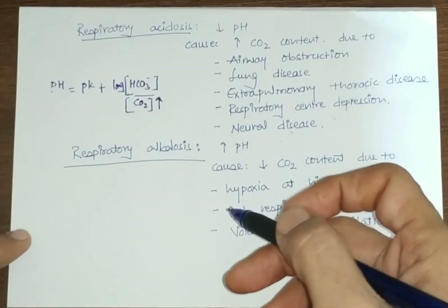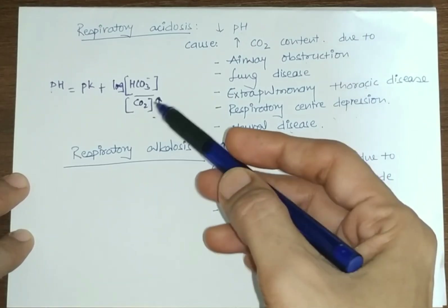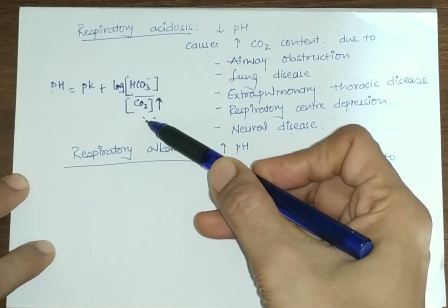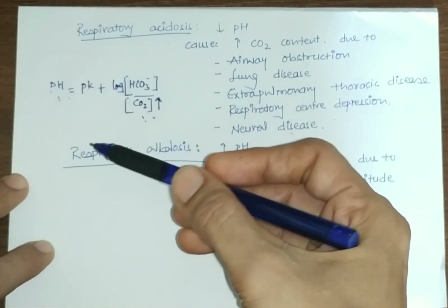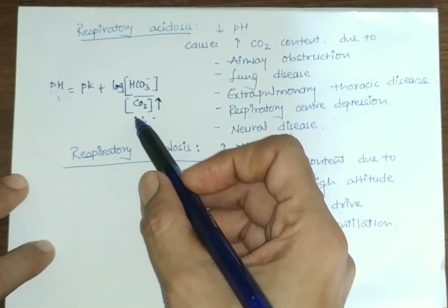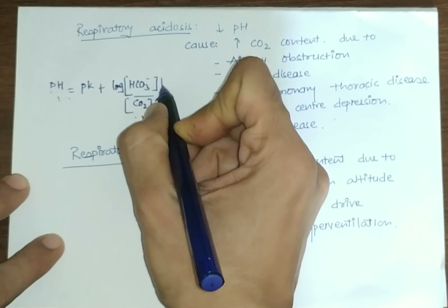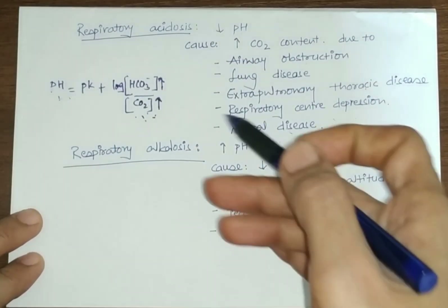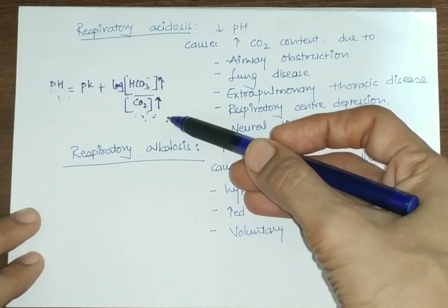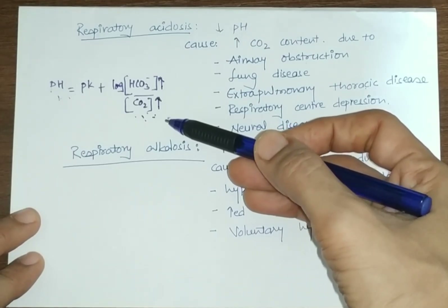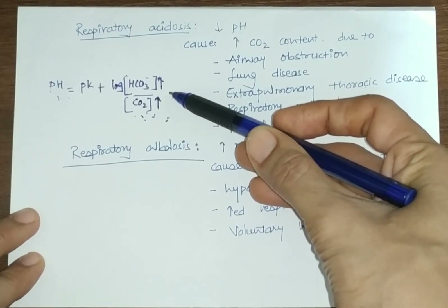In uncompensated respiratory acidosis, only CO2 concentration increases, raising H+ ion concentration and decreasing pH. In compensated respiratory acidosis, the elevated CO2 increases carbonic acid production, which also raises HCO3⁻ concentration. The renal compensatory mechanism involves increased excretion of H+ ions; as H+ ions are excreted, HCO3⁻ ions are reabsorbed, further increasing bicarbonate ion concentration.